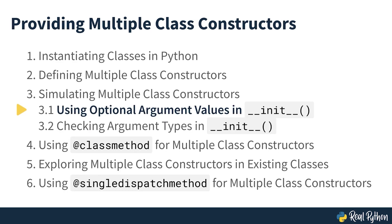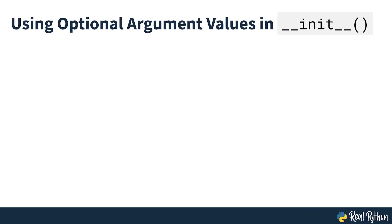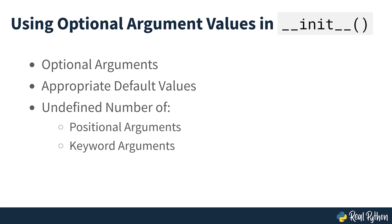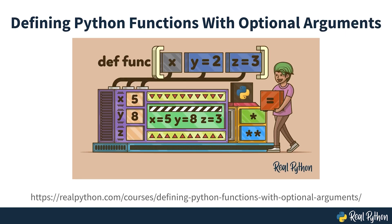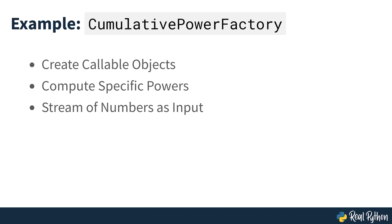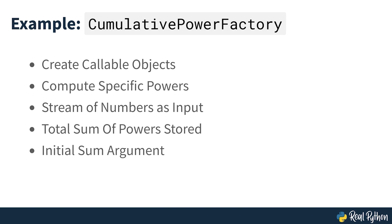Using optional argument values in dunder init. An elegant and Pythonic way to simulate multiple constructors is to implement a dunder init method with optional arguments by specifying appropriate default argument values. You can also provide optional arguments using an undefined number of positional or keyword arguments. Let's say you need to code a factory class called CumulativePowerFactory. This class will create callable objects that compute specific powers using a stream of numbers as input, and track the total sum of consecutive powers. Go ahead and create a power.py file in your current directory.